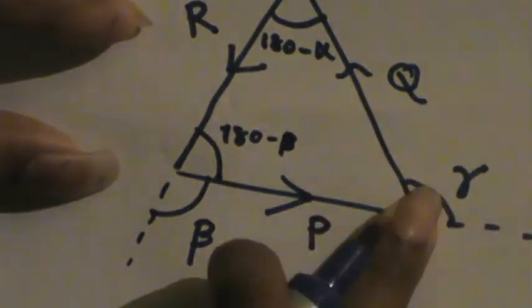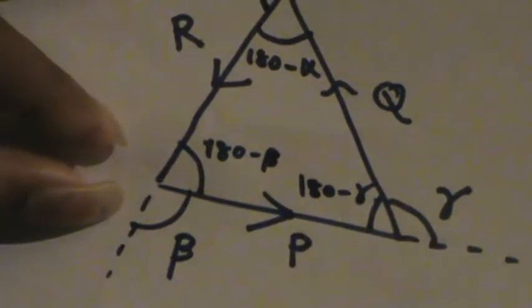The angle between R and P has been taken as beta. R is converging and P is diverging, so I'll diverge R from this side so that this angle is now beta. This is a simple triangle — so if this is alpha, then this should be 180 minus alpha; if this is beta, this should be 180 minus beta; and if this is gamma, this should be 180 minus gamma.